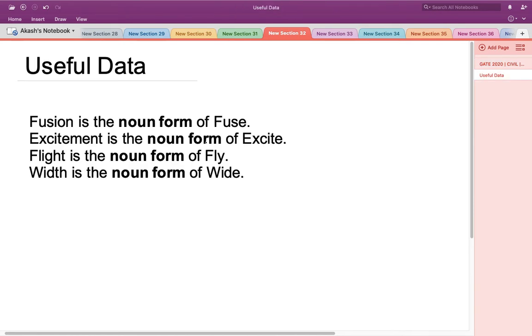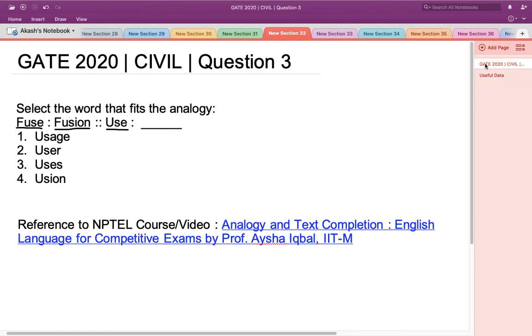It is given that fusion is the noun form of the word fuse. Similarly, excitement is the noun form of the word excite, and flight is the noun form of the word fly, and width is the noun form of the word wide. So every verb has to be followed by a noun. Now in this case, the noun form of the word use would be usage.